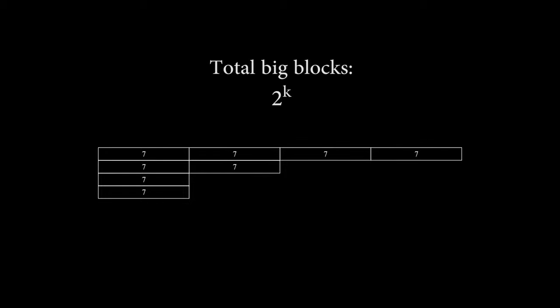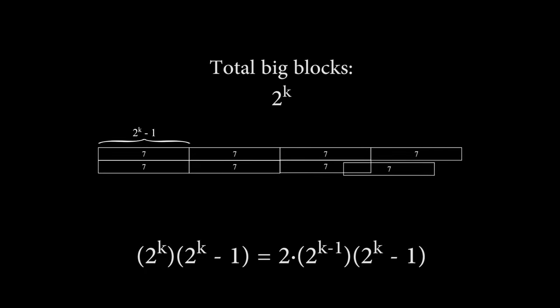And remember that each big block holds the value 2 to the k minus 1. So if we multiply the number of big blocks by their value, we get 2 to the k times 2 to the k minus 1, and factor out a 2, and we'll end up with 2 times 2 to the k-1 times 2 to the k minus 1.